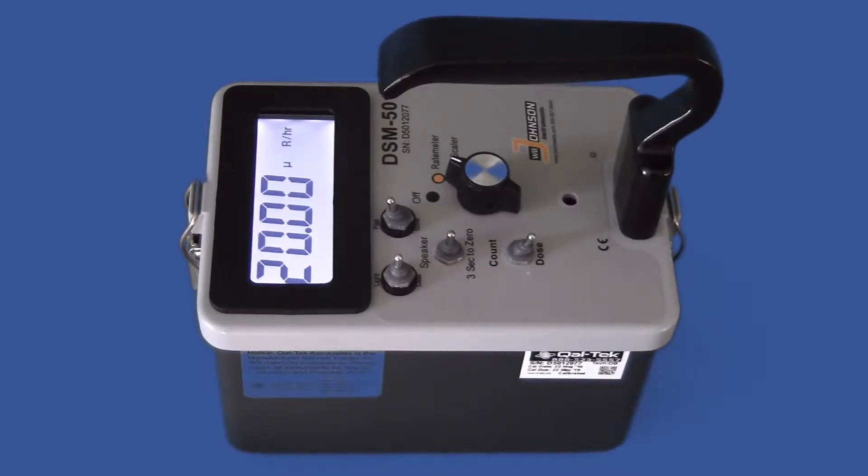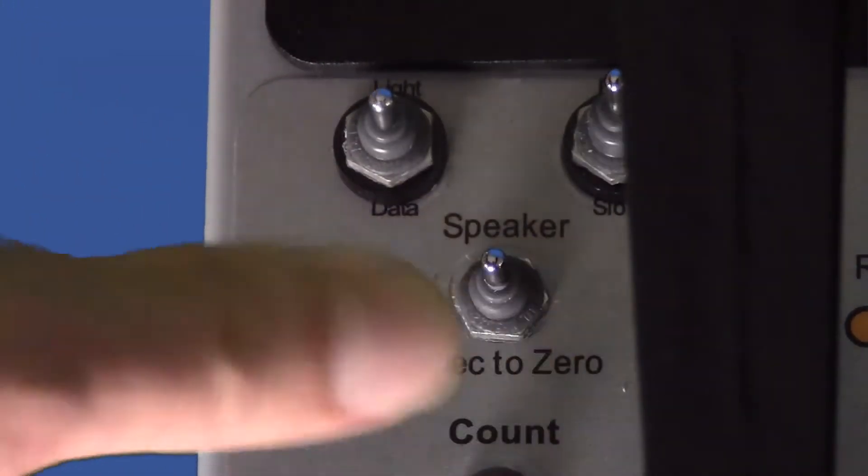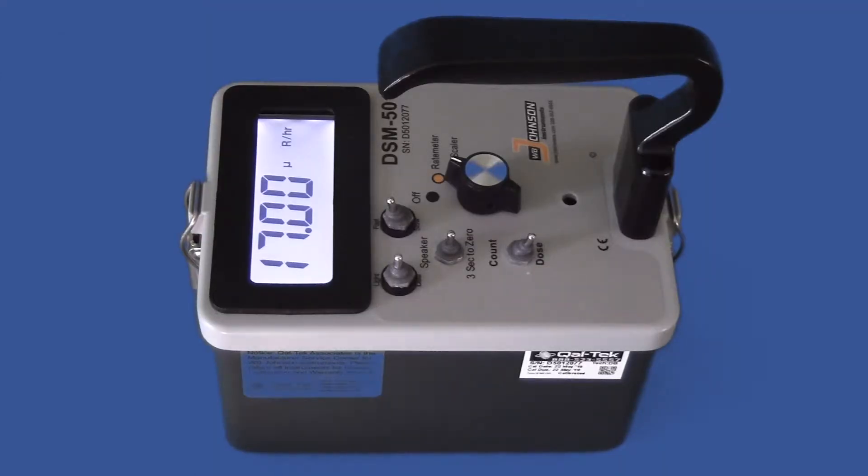We will now check out the speaker function. This switch toggles the speaker on and off. The speaker can respond faster than the meter display, so most keep it on during the survey, but it can also be turned off.